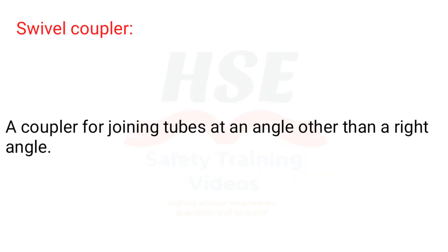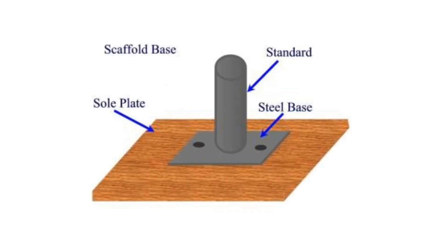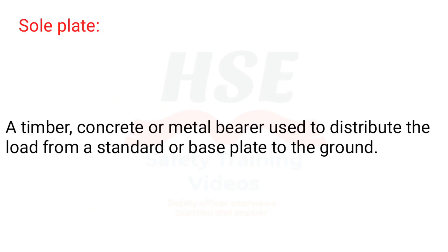Swivel coupler. A coupler for joining tubes at an angle other than a right angle. Sole plate. A timber, concrete or metal bearer used to distribute the load from a standard or base plate to the ground.